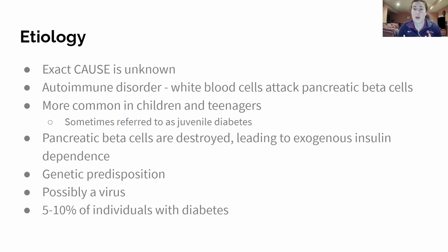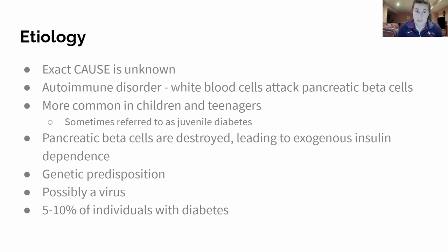In this case, the cells being attacked by the white blood cells are the pancreatic beta cells, and therefore they're unable to produce any more insulin — they need that exogenous insulin to continue functioning normally. It's more common in children and teenagers; the mean onset is between 11 and 13 years.